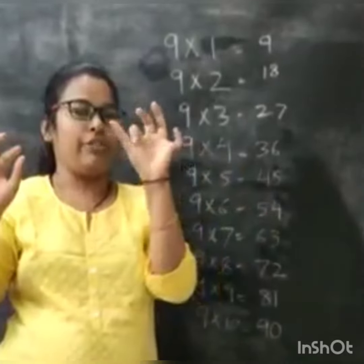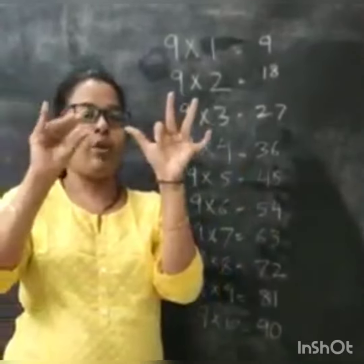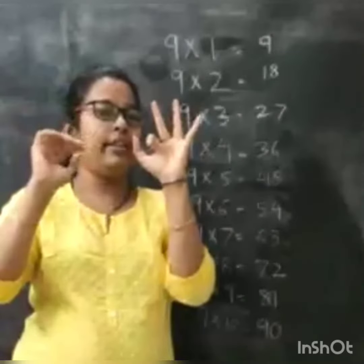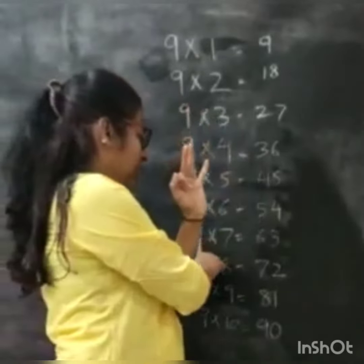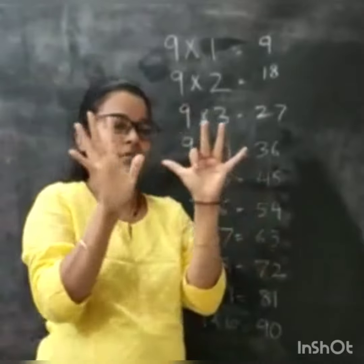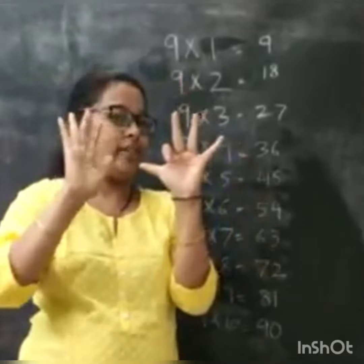Now I will close my seventh finger. So 6 over here and 3 over here. So 9 times 7 is 63.